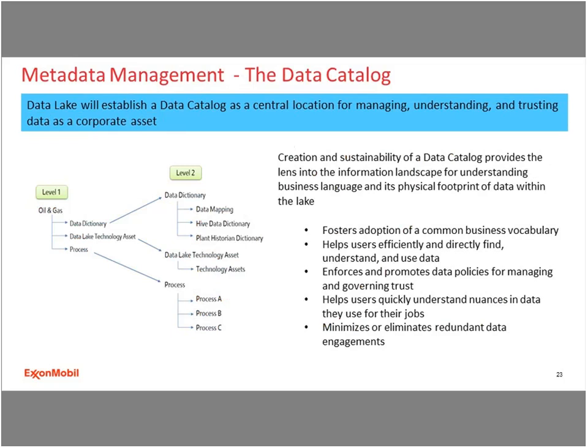The data catalog contains both business and technical metadata. It provides a window into the information landscape and serves as a central location for managing, understanding, and trusting the data. Here you can also manage policies, data quality rules, and data lineage. Some of the benefits of a data catalog: you have a common vocabulary understood by all; it helps users find and use their data; it enforces data policy rules; it helps users understand the nuances of their data; and it also minimizes redundant data engagements.